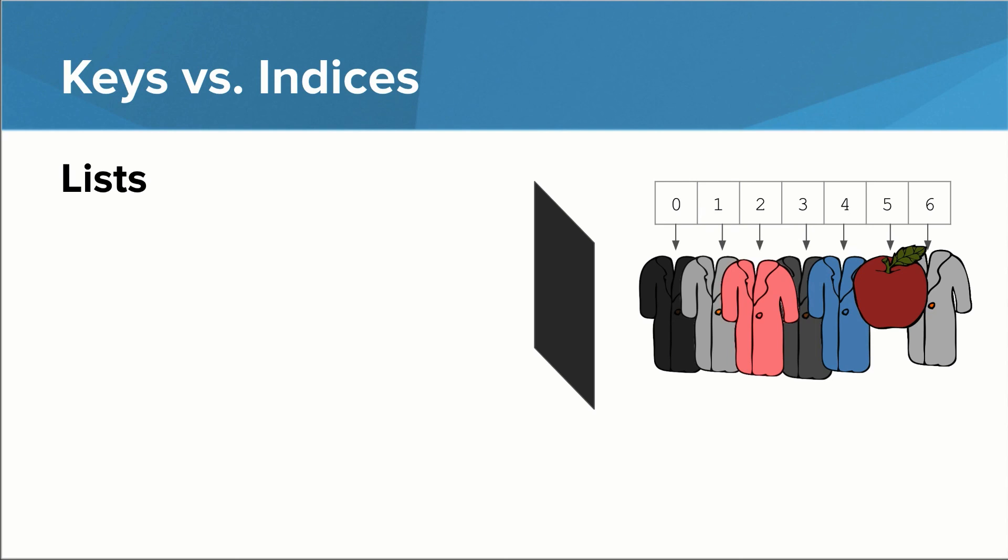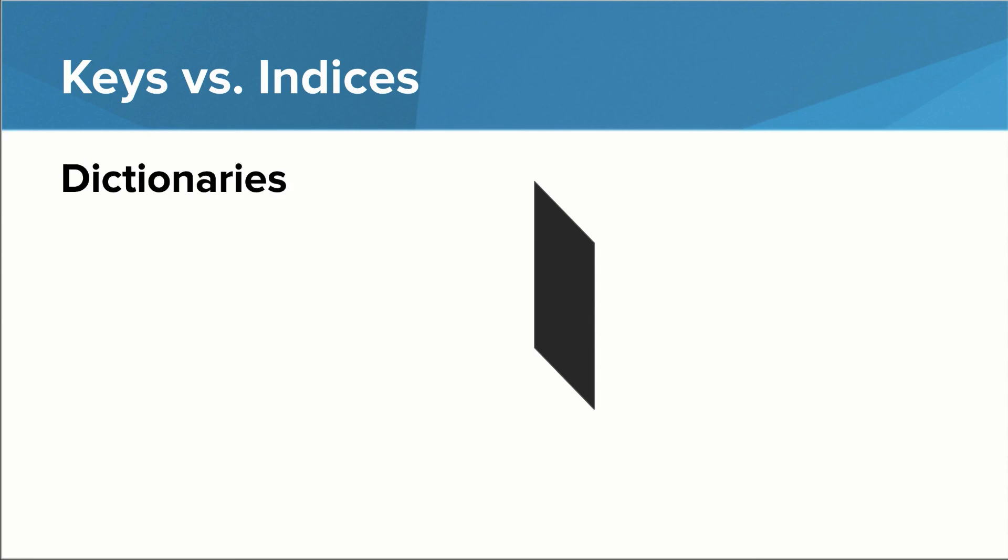And if you recall, a list doesn't have to contain all the same type of thing. One of these things might not be a coat at all. I'm not sure if this works with actual coat checks though. Okay, let's extend this analogy to dictionaries.